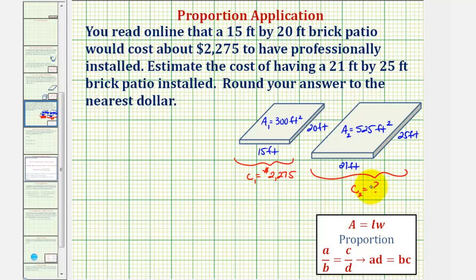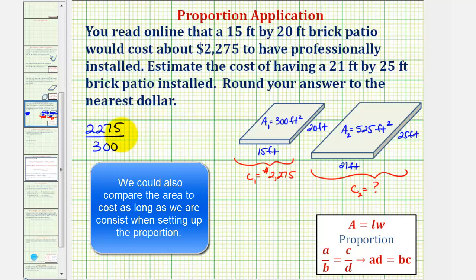So a couple ways to solve this, but let's go ahead and solve this using a proportion where we compare the cost to the area. So looking at the smaller patio, we know the total cost would be $2,275 when the area is 300 square feet.